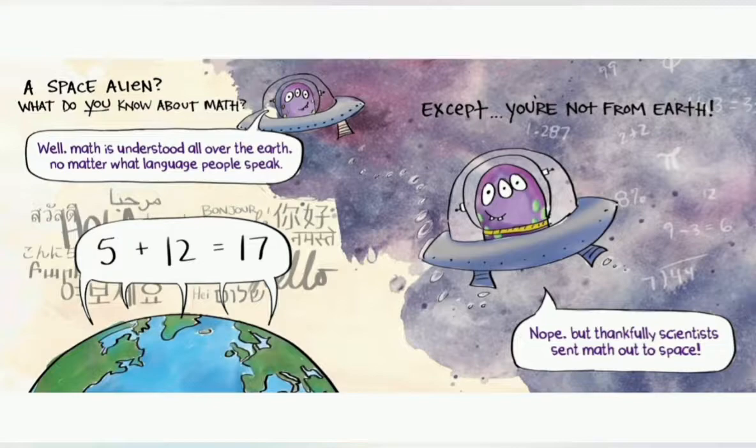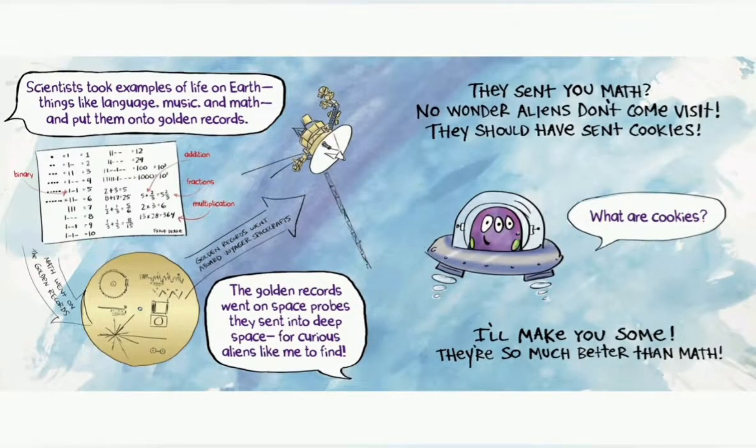A space alien. What do you know about math? Well, math is understood all over the Earth, no matter what language people speak. Five plus twelve is seventeen. True, except you're not from Earth. Nope. But thankfully, scientists sent math out to space. Scientists took examples of life on Earth - things like language, music, and math - and put them onto golden records. Binary, addition, fractions, multiplication. Math went on the golden records, the golden records went on space probes, and sent it into deep space for curious aliens like me to find.